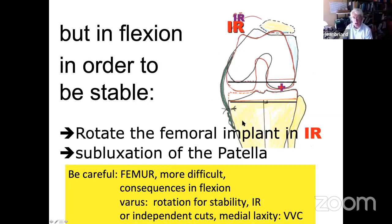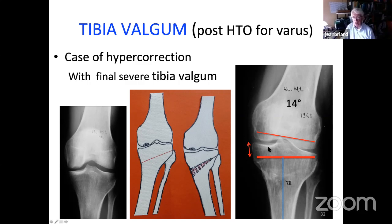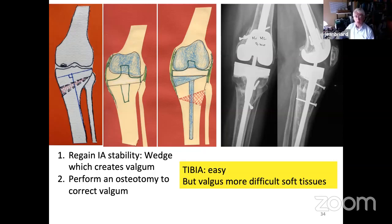Tibia valga — for example after HTO — the joint looks normal, but if you plan a cut perpendicular to the mechanical axis, you'll cut a lot of medial plateau bone and create laxity — what we call 'resection laxity.' This was demonstrated with independent cuts showing medial laxity, which required repair with a well shear and reduction of the osteotomy. Tibia is generally easier, but valgus is more difficult for soft tissues.